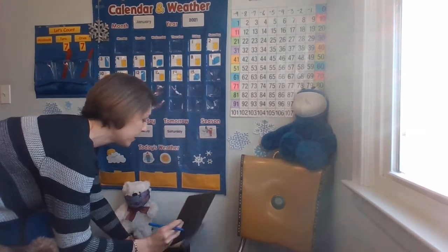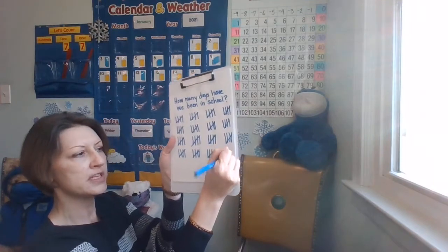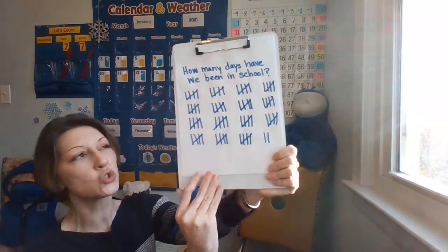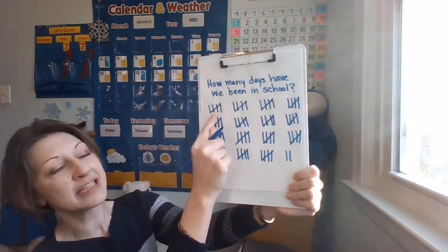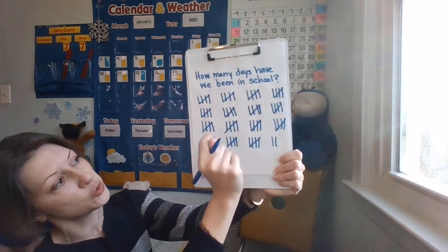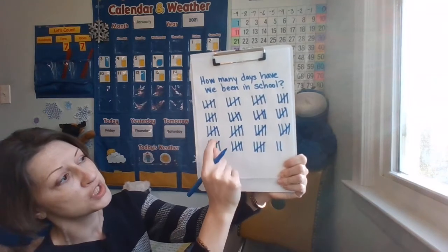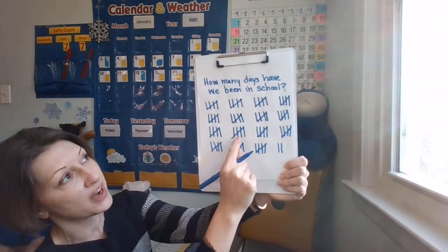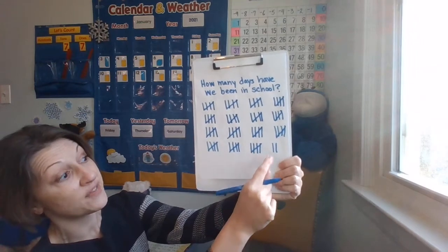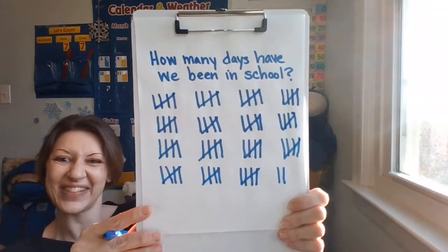We're going to be pulling straight down for the tally mark. How many days have we been in school? Skip count by fives with me — ready? 5, 10, 15, 20, 25, 30, 35, 40, 45, 50, 55, 60, 65, 70, 75, 76, 77!